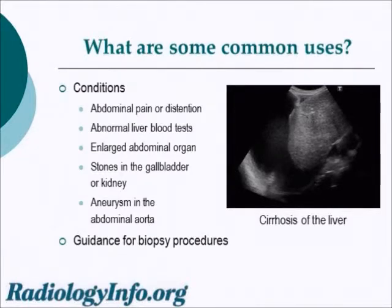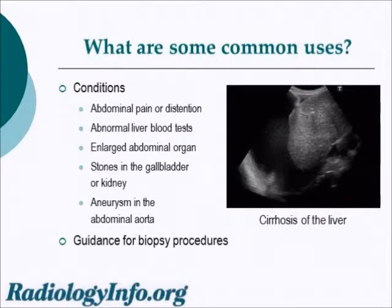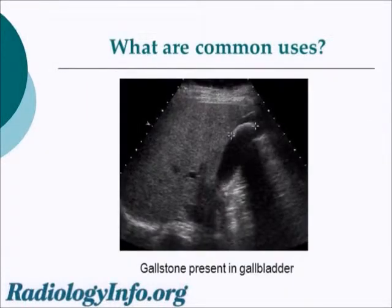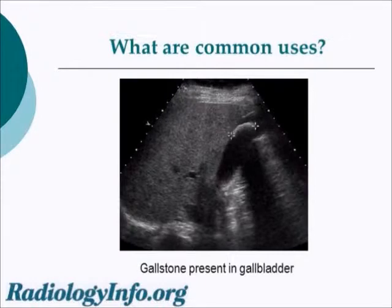In this image, the liver is depicted as the medium gray object in the center. This is a patient with cirrhosis of the liver, and the liver is abnormally bumpy and surrounded by fluid, the dark area to the left and bottom of the image. In this next picture, we can see a gallstone in the gallbladder, depicted with the plus signs at either end of the gallstone. The gallstone is sitting in the gallbladder, the diagonally oriented black object.